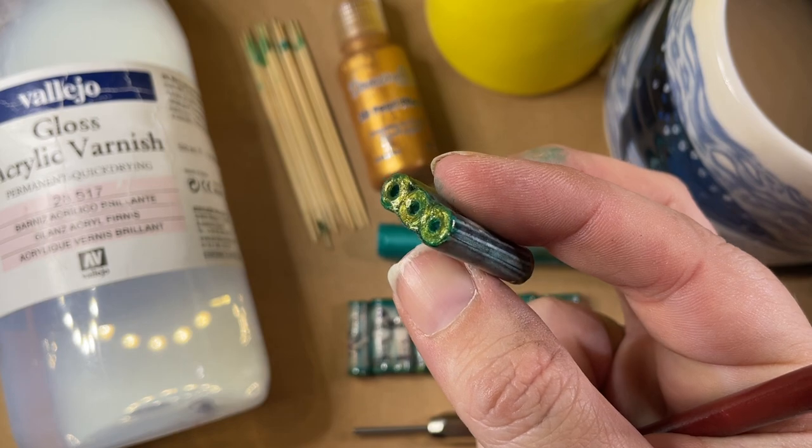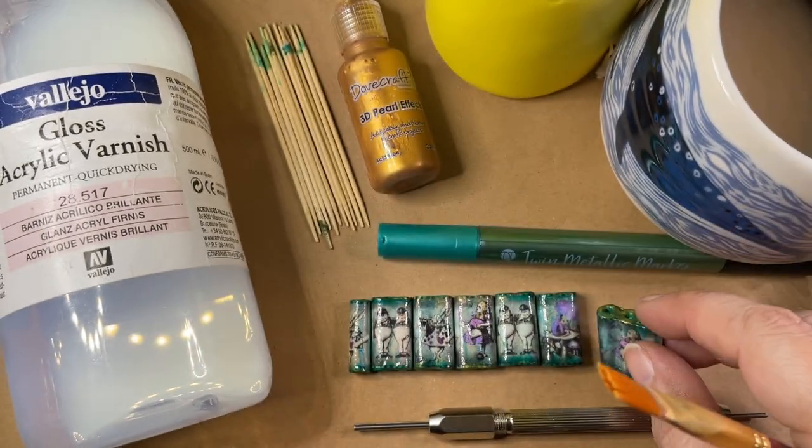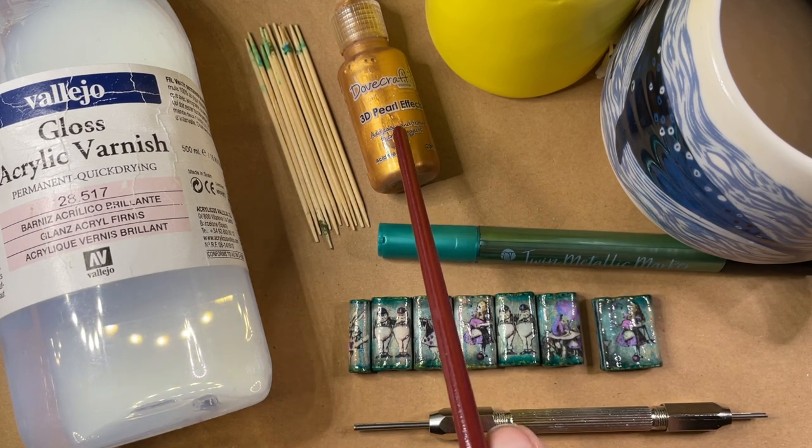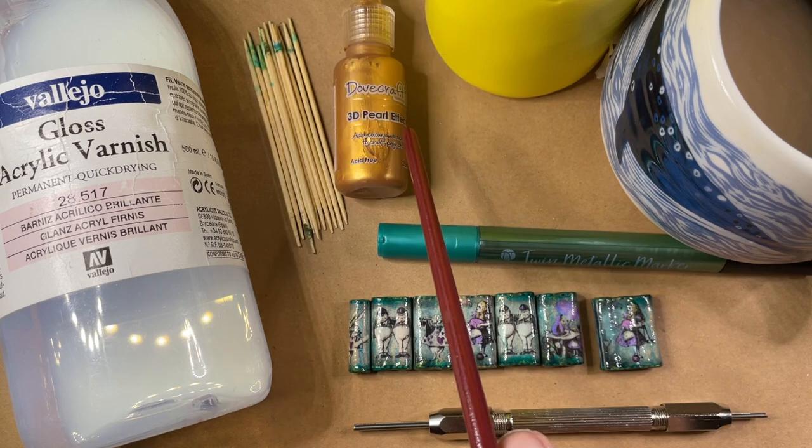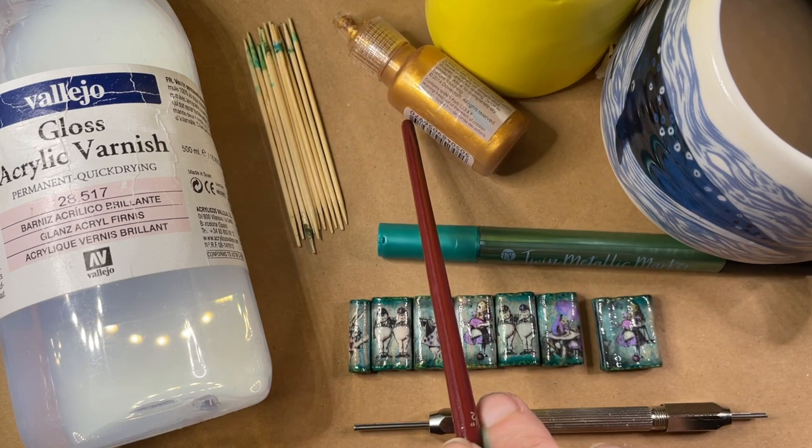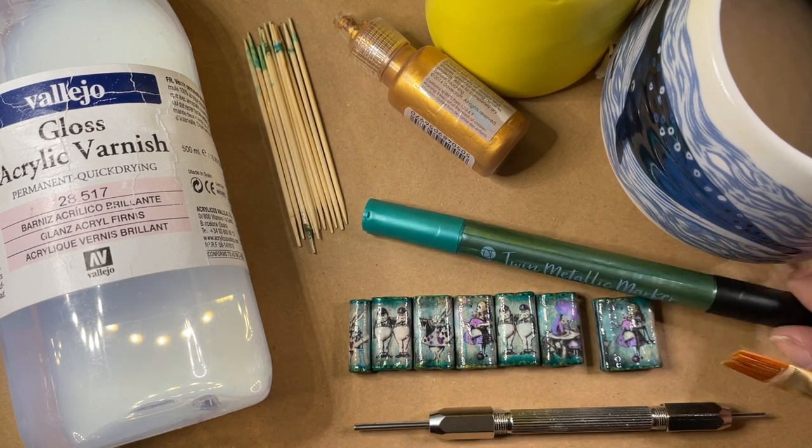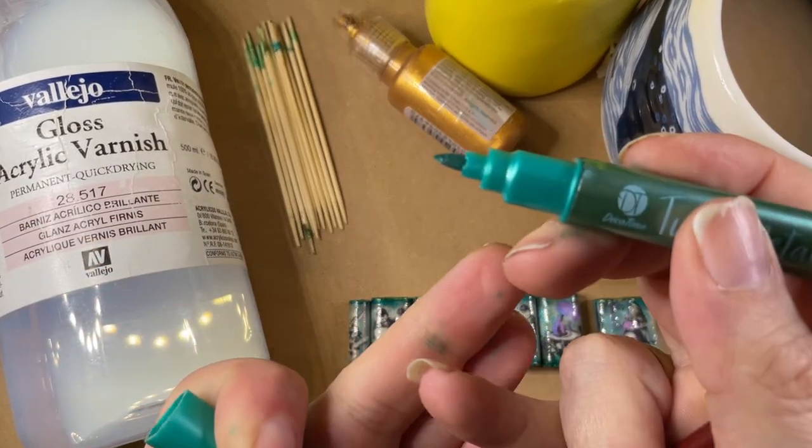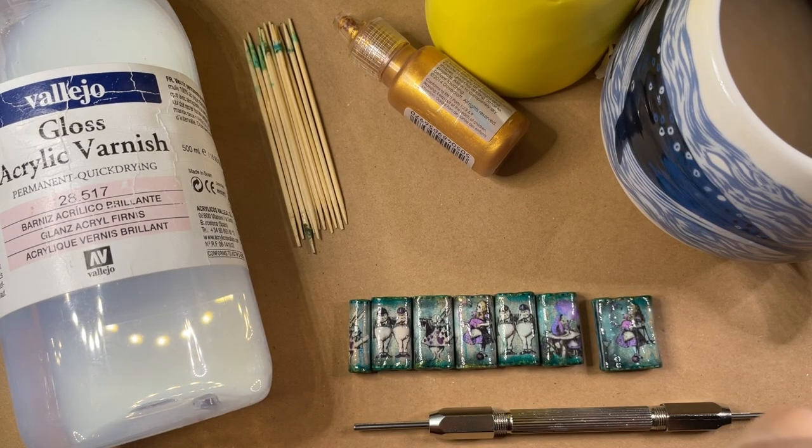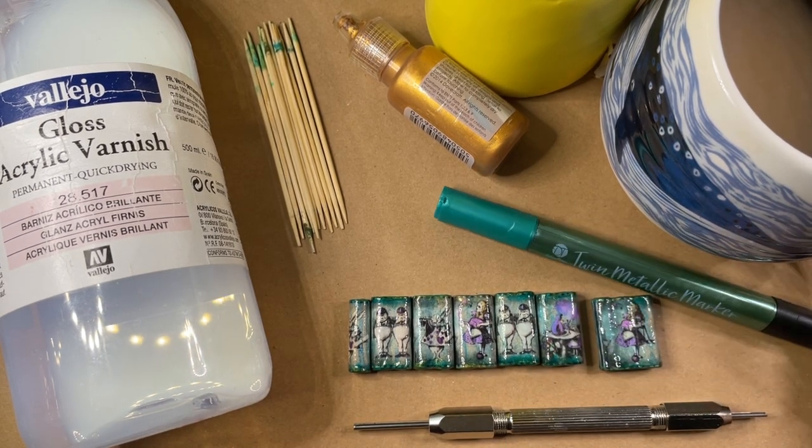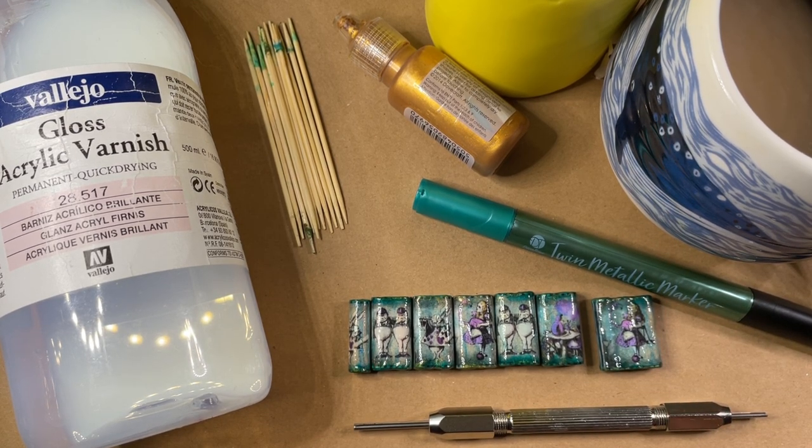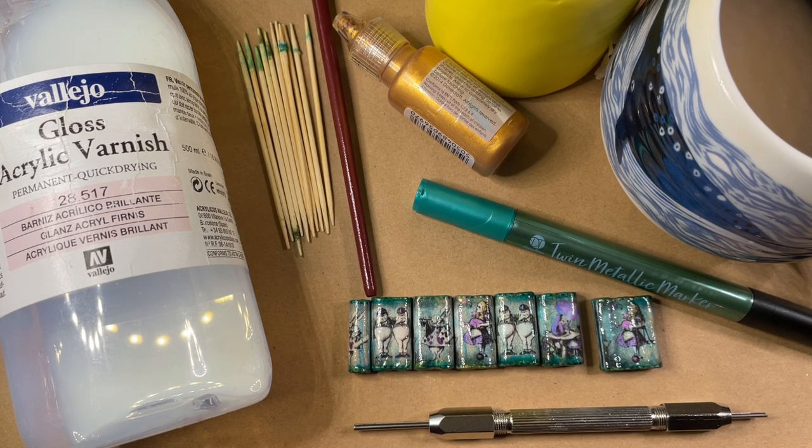And then at the top of these beads I've given them a bit of a subtle gold color using this Dovecraft 3D pearl effect drops. I've also got this metallic marker in this gorgeous turquoise-y, aqua-y, teal-y color that I'm going to be using to add some further details. And of course I've got a mug of coffee. So grab yours and I will show you how we're going to make these beads.